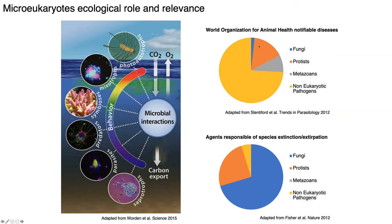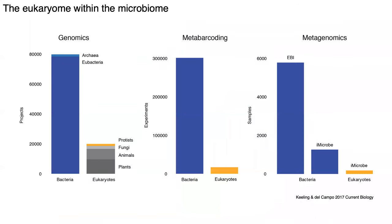Close to 20 percent of the agents that need to be notified to the World Organization of Animal Health because they cause disease happen to be protists and unicellular fungi. Within the organisms responsible for species extinction and extirpation, 25 percent are protists and most of the rest are fungi, most of them unicellular. So micro-eukaryotes — fungal or protist — are important ecologically and for ecosystem health. But if they're important and diverse, why do we not know that much about them?